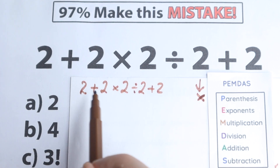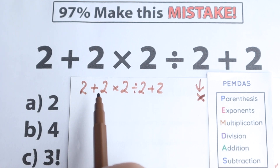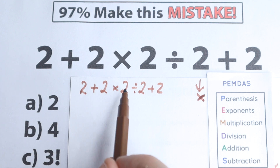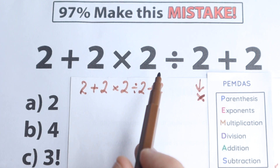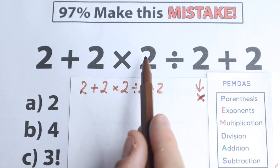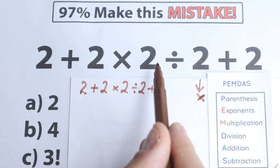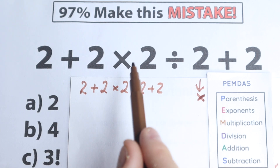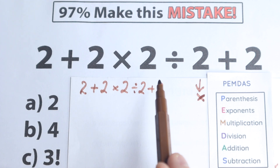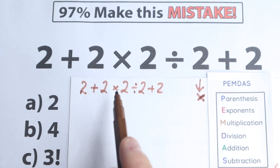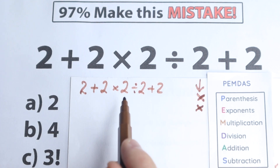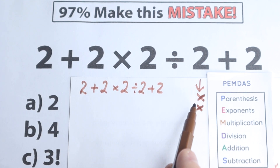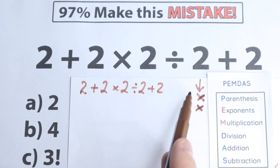What about exponents? Let's check — maybe we have squares, cubes, or fifth powers right here. No, I don't see any of those. We don't have any exponents, which is great. If we had, for example, 2 to the power of 10, we would need to start with that. But in our case we have no exponents, so we skip this step as well.